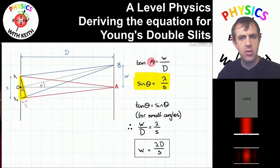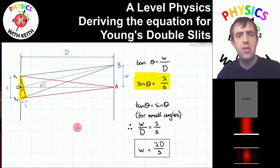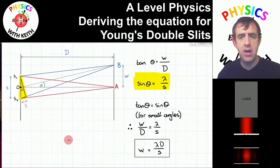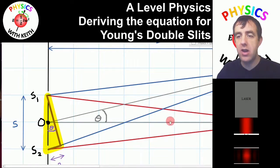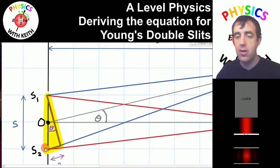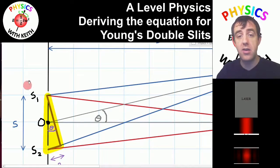I've used the same angle letter theta in both triangles, and that's because it is the same angle. The grey line is perpendicular to the purple line, and the grey line here is perpendicular to the line between s1 and s2. Therefore, this angle theta equals the purple angle theta — they are the same angle.